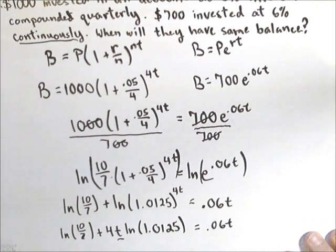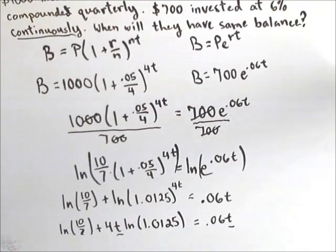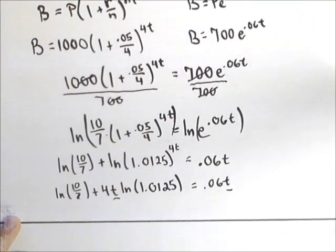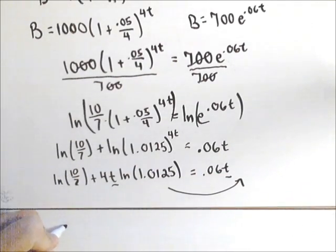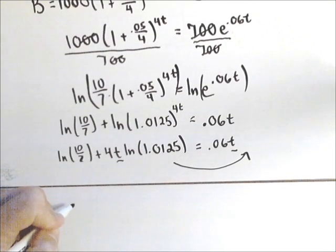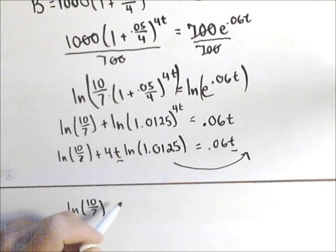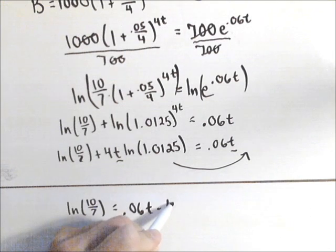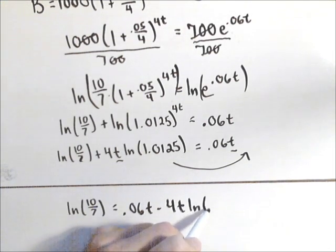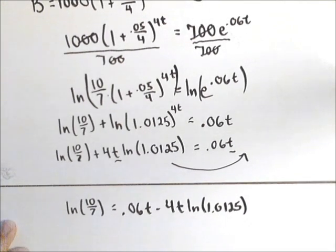I have two terms with a t in it. So to do this I'm going to need to get those two terms on the same side. So we're going to do that with some subtraction. In fact, I'm going to move this guy over to the left hand side. So what I'm going to have is natural log of 10 sevenths equals .06t minus 4t natural log of 1.0125. All right.